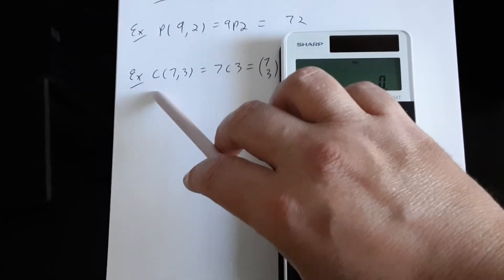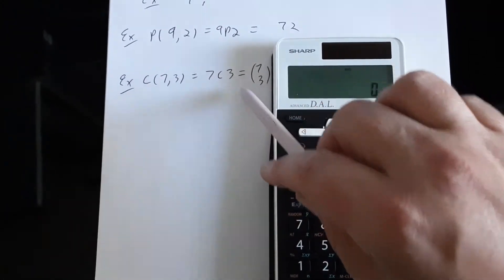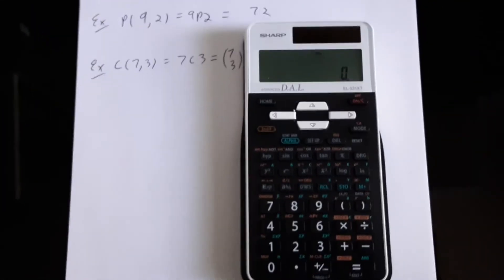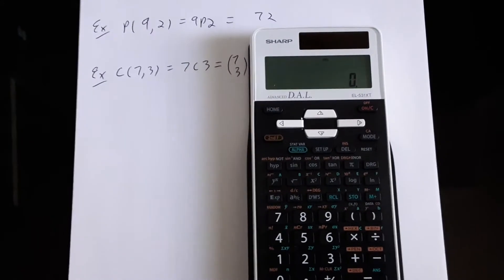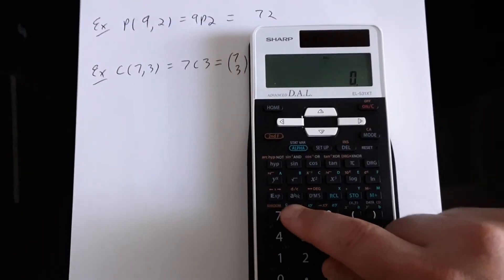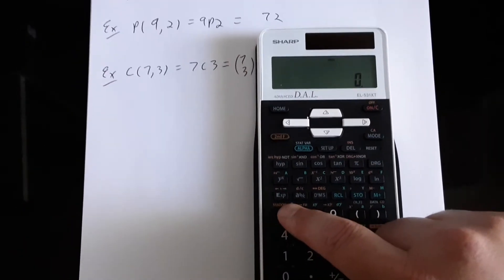That could be written as C73 or 7C3 or 7 choosing three. All of those are exactly the same in meaning. They all mean seven distinct objects selecting three of them.